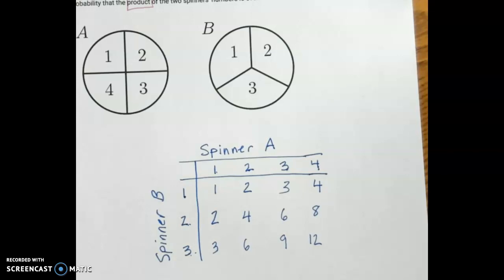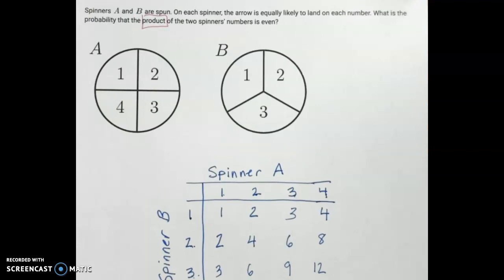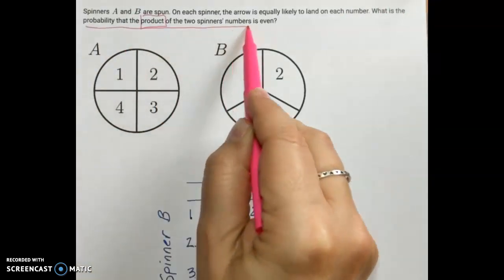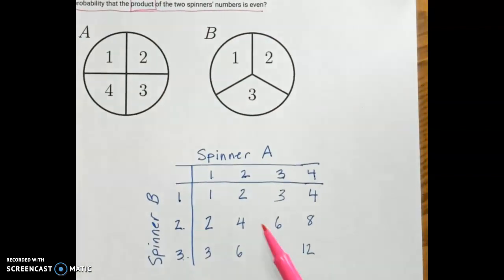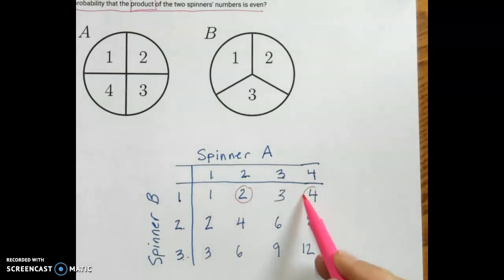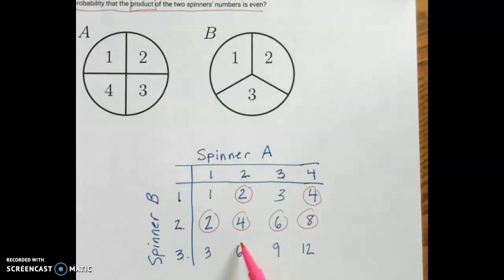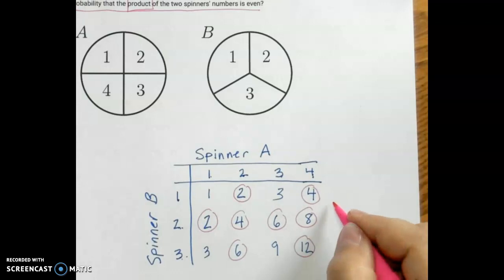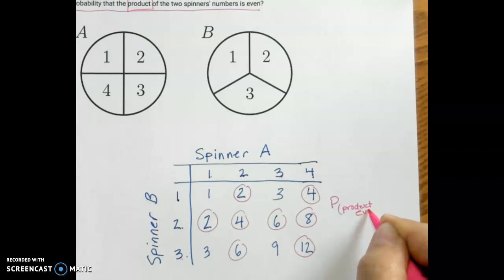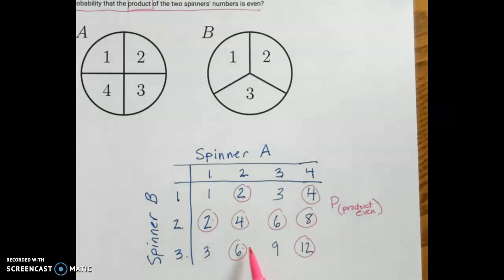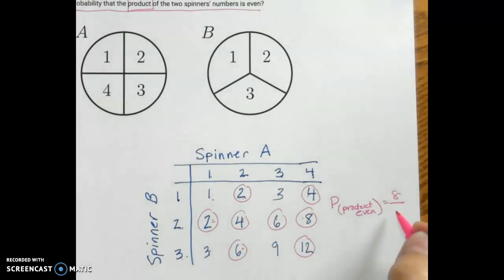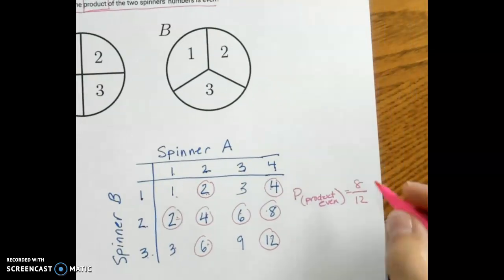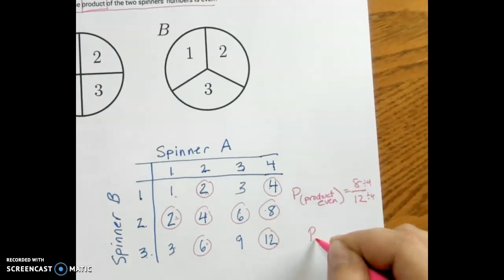The array gives us all the possible outcomes when we spin both spinners. Now we're going to use that array to find the probability that the product is even. I'm going to circle all of the outcomes that are even: two, four, two, four, six, eight, six, and twelve — that's eight outcomes that are even out of twelve possible outcomes total. If I simplify, both are divisible by four, so the probability that our product is even is two-thirds.